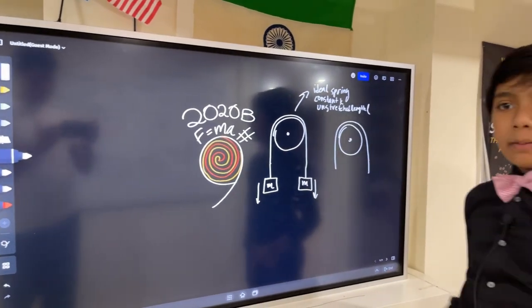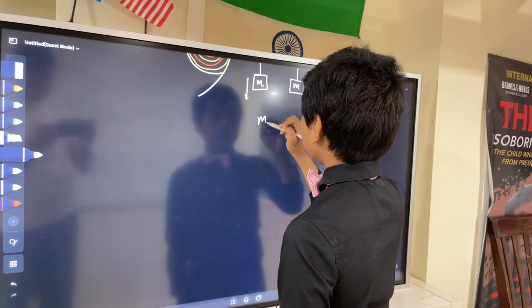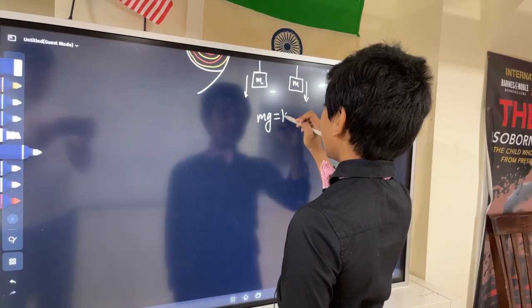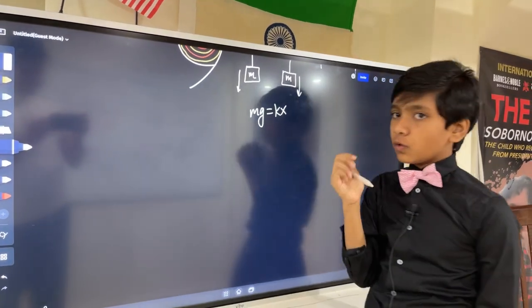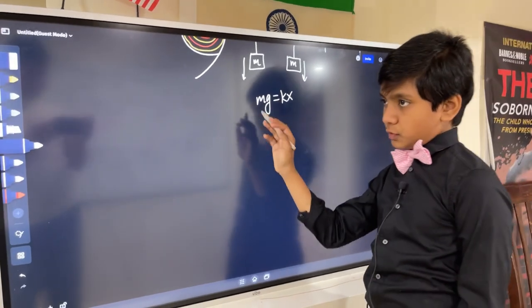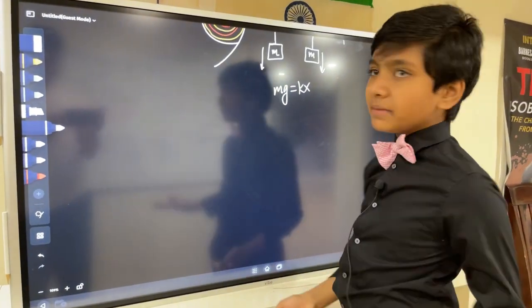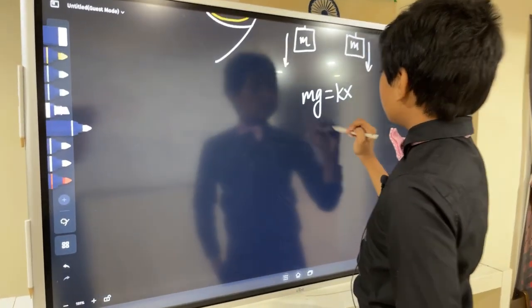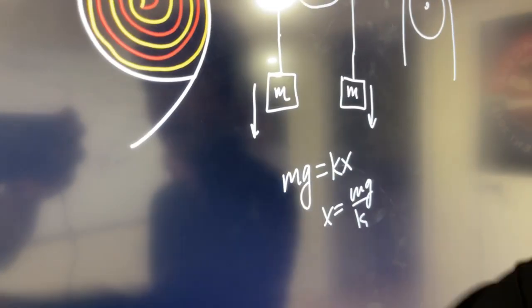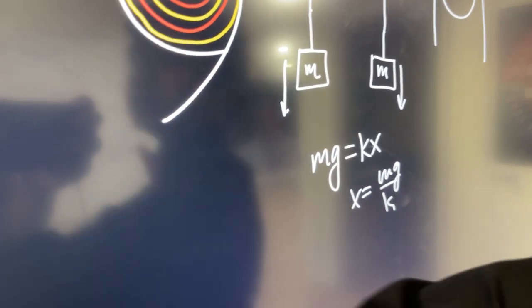These masses are going to pull it down, but by how much? Well if we're talking equilibrium then the upward force has to be equal to the downward force. Well the downward force has to be equal to the upward force, but same thing, main thing. So X equals MG over K, except that's not really how we're going to traverse this.